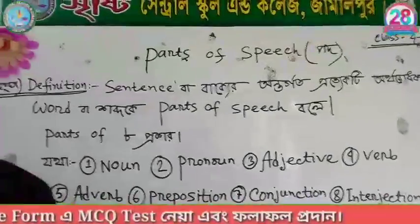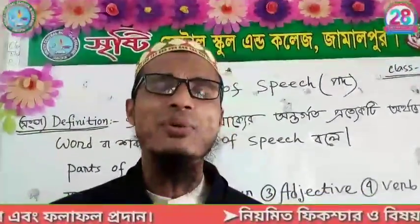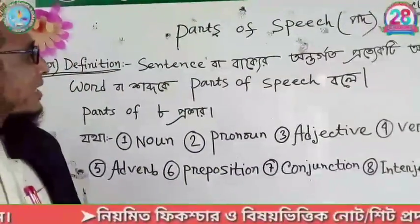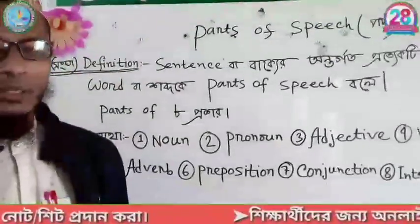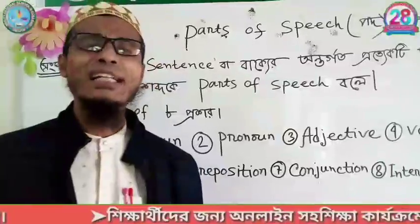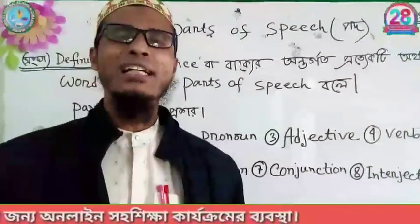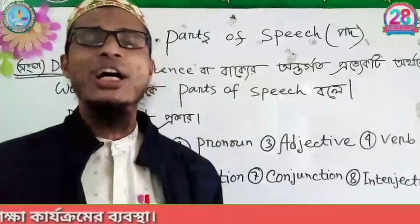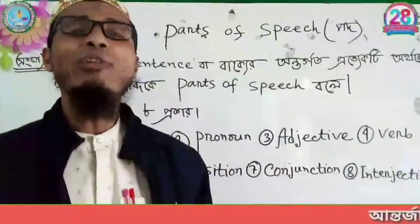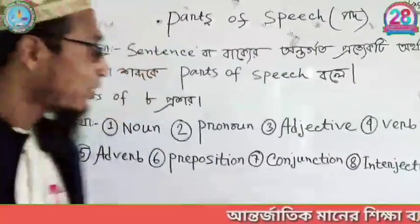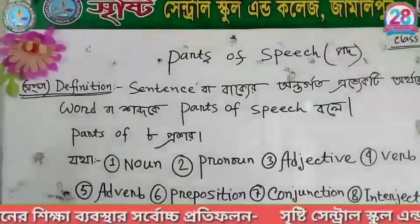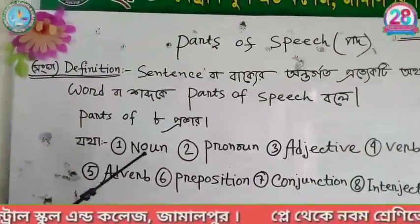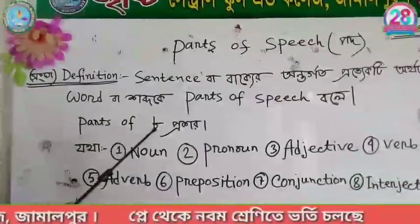What are the kinds of Parts of Speech? As far as this, Parts of Speech has kinds. In English language, there are Parts of Speech — all kinds of contents. In English language, there are 8 Parts of Speech. So, how do you understand the Parts of Speech? In English language, Parts of Speech has 8 words — 8 kinds.